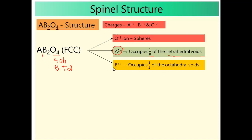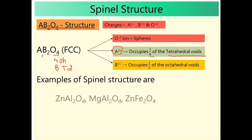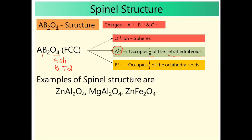This is the simple structure of AB2O4 spinal. In the spinal structure: oxygen occupies spheres, A²⁺ occupies 1/8 of tetrahedral voids, and half of the octahedral voids are occupied by B³⁺. Examples of spinal structures: ZnAl2O4, MgAl2O4, ZnFe2O4.